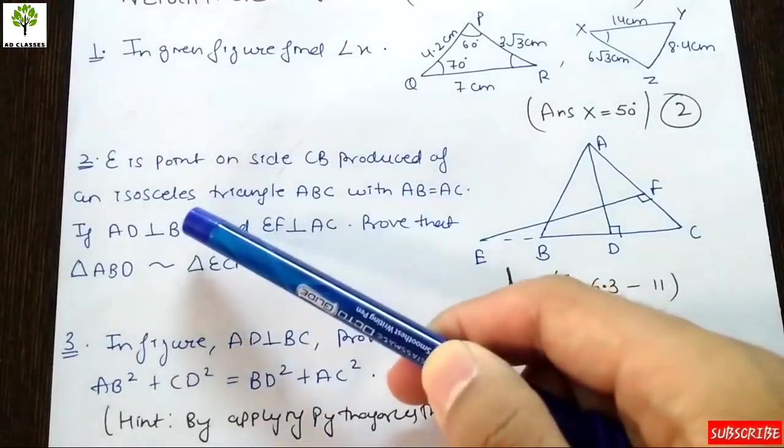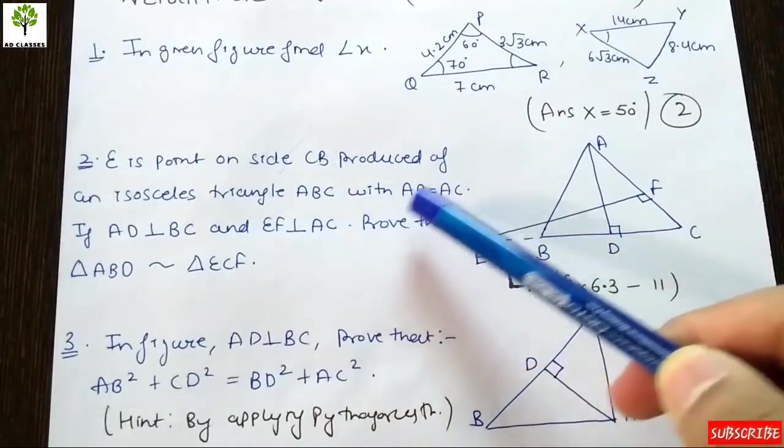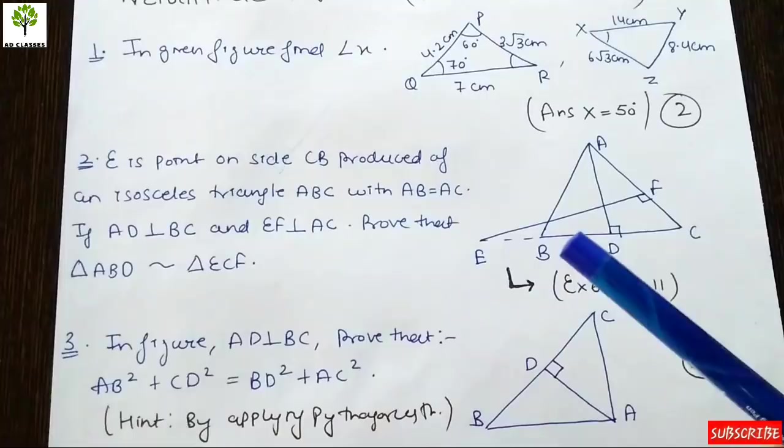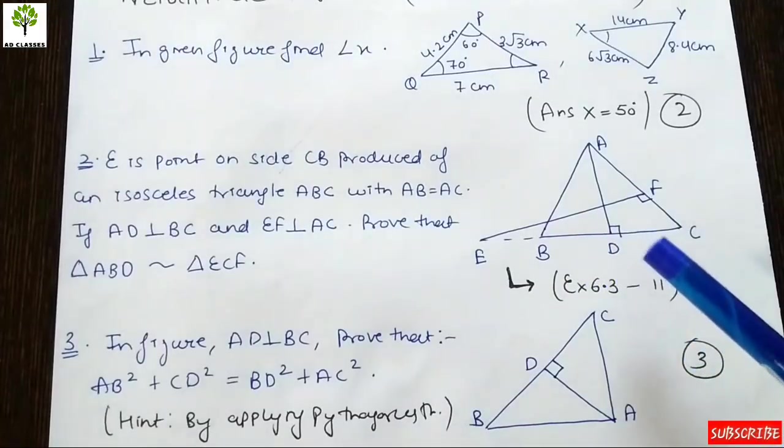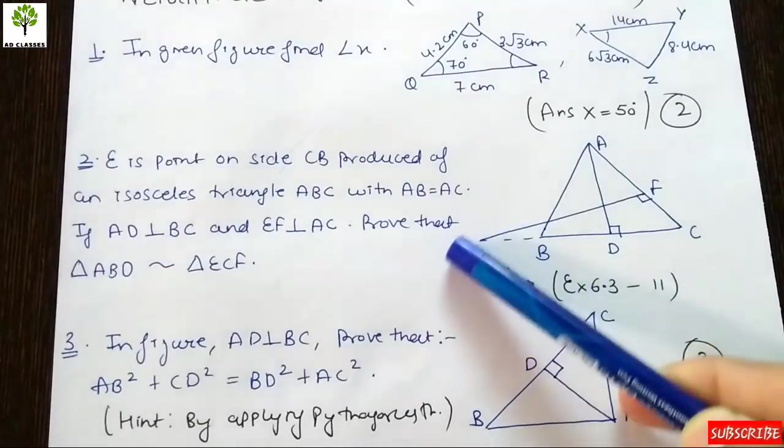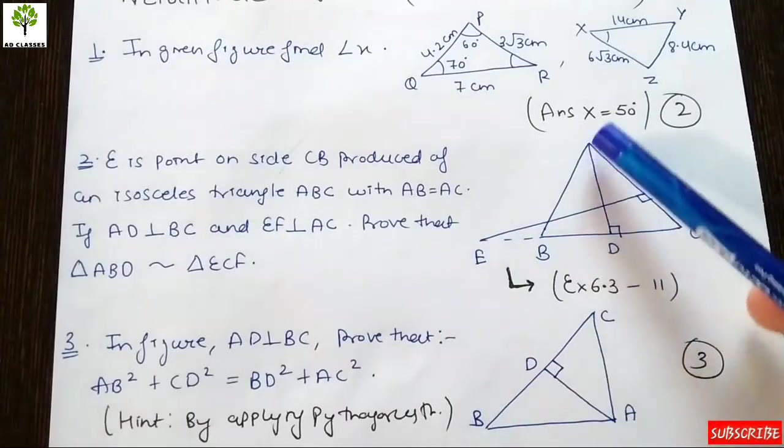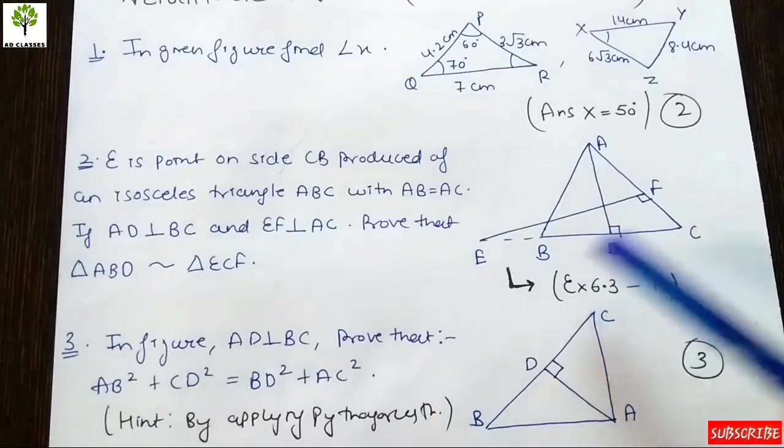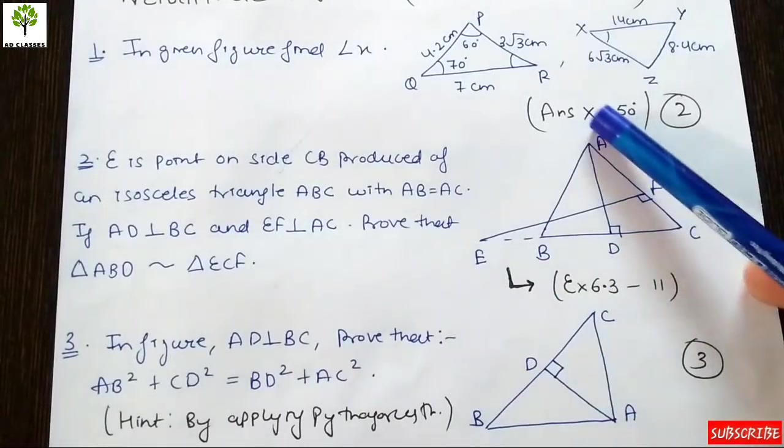Question number 2: E is a point on side CB produced of an isosceles triangle ABC with AB equals AC. If we produce CB and E is a point on CB produced, we have a figure where AD is perpendicular to BC and EF is perpendicular to AC.